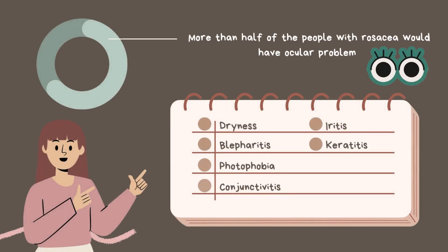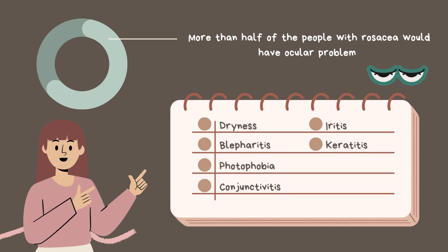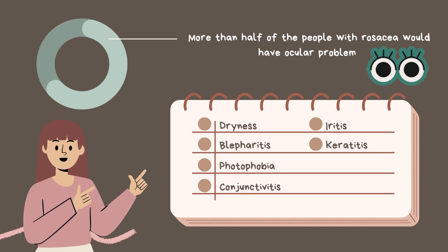Additionally, it is known that more than half of the people who suffer from rosacea will have ocular problems as well, such as blepharitis or inflammation of the eyelids characterized by red, swollen, irritated eyelids; photophobia, which is sensitivity to light; conjunctivitis, which is inflammation of the inner part of the eyelids; iritis, which is inflammation of the iris or the colored part of the eye; and in rare cases, keratitis, which is inflammation of the cornea of the eye.